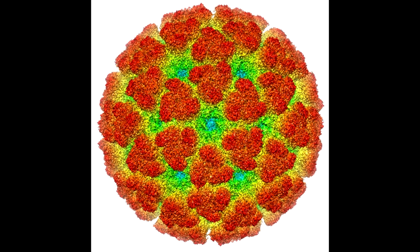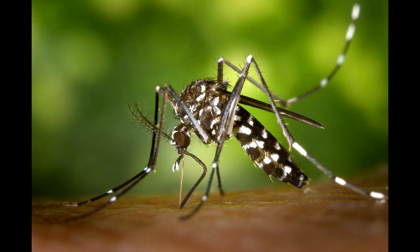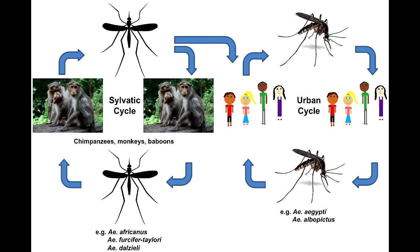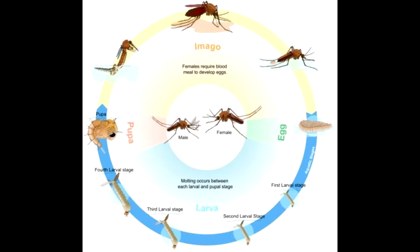Very few patients with chikungunya have mortality — that is, death. Normally all patients recover without any specific treatment. The virus is passed to humans by two species of mosquito of the genus Aedes: Aedes albopictus and Aedes aegypti. Animal reservoirs of the virus include monkeys, birds, cattle, and rodents.